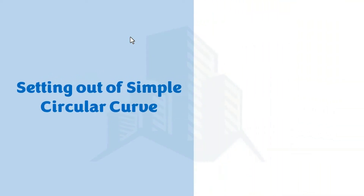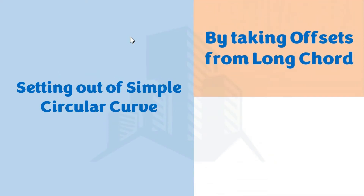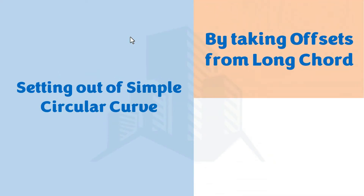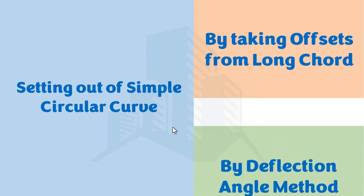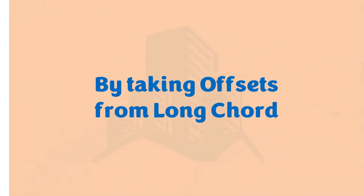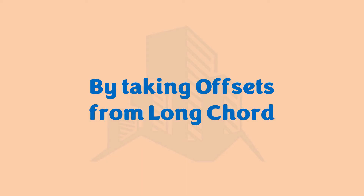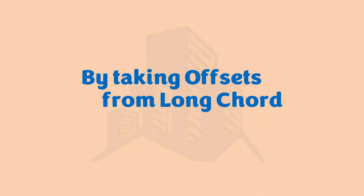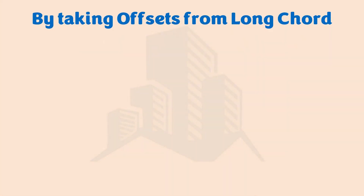There are various ways through which we can do the setting out of the simple circular curve. In this video I'm going to discuss the method in which we take offsets from the long chord. There is another method — the deflection angle method — which will be discussed in the next video. So let's discuss this method.